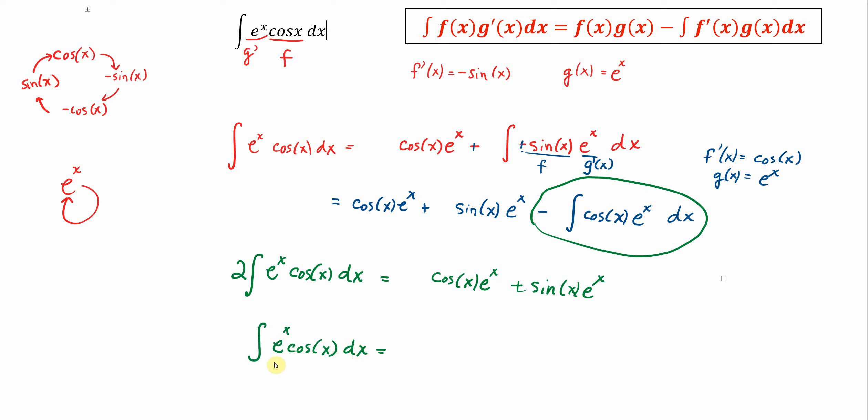The antiderivative of e to the x cosine x is equal to cosine x e to the x plus, let me clean this up, sine of x e to the x, all of that divided by 2 plus a constant.